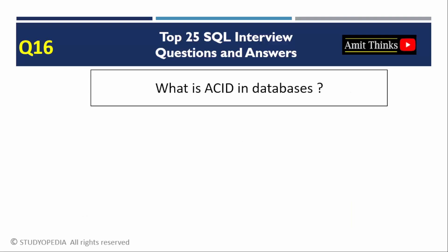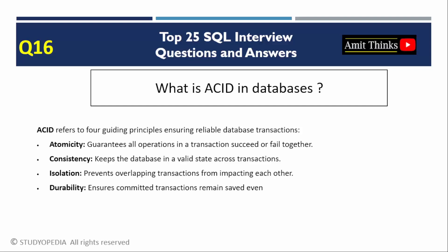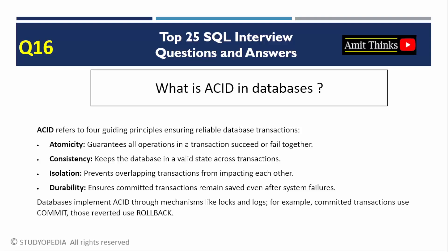Question 16: What is ACID in databases? ACID properties ensure transaction reliability in SQL. A stands for Atomicity (transactions are all or nothing). C stands for Consistency (transactions bring the database from one valid state to another). I stands for Isolation (concurrent transactions do not interfere). D stands for Durability (committed transactions persist despite failures). Databases use locking and logging to enforce ACID. For example, COMMIT saves changes permanently while ROLLBACK reverts pending changes.